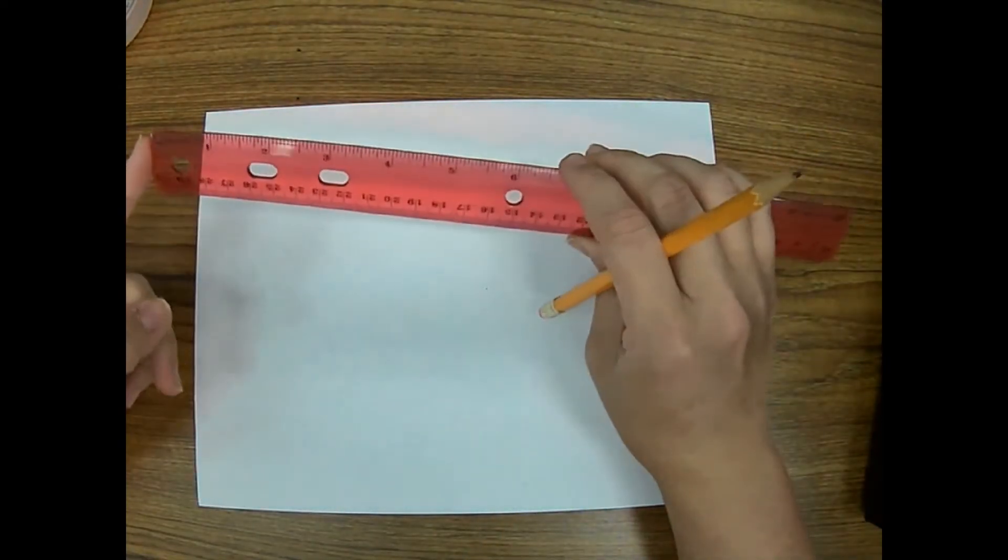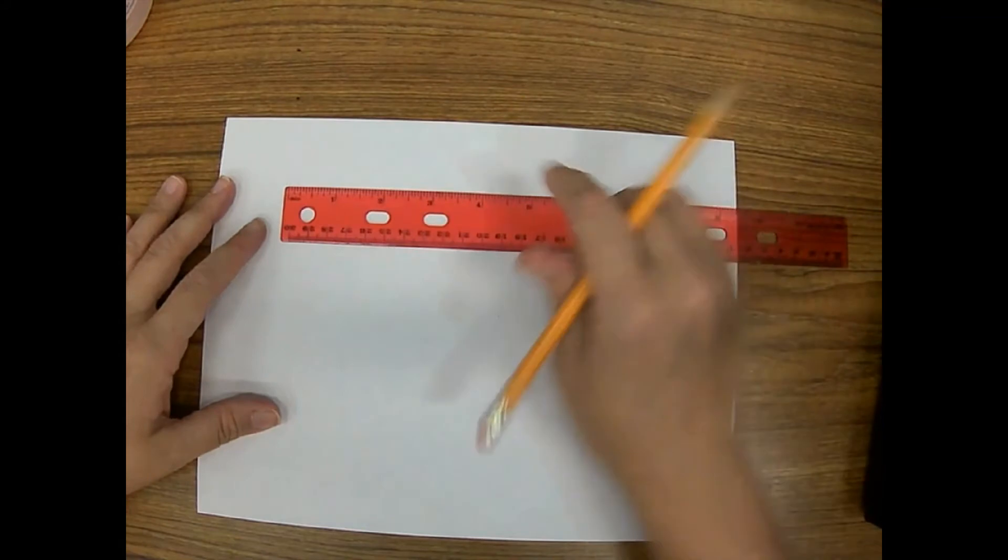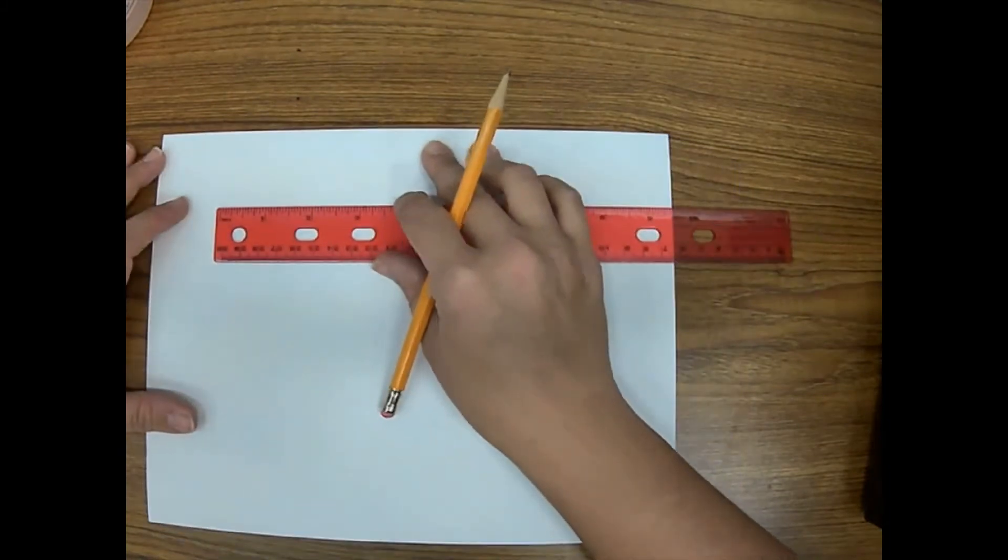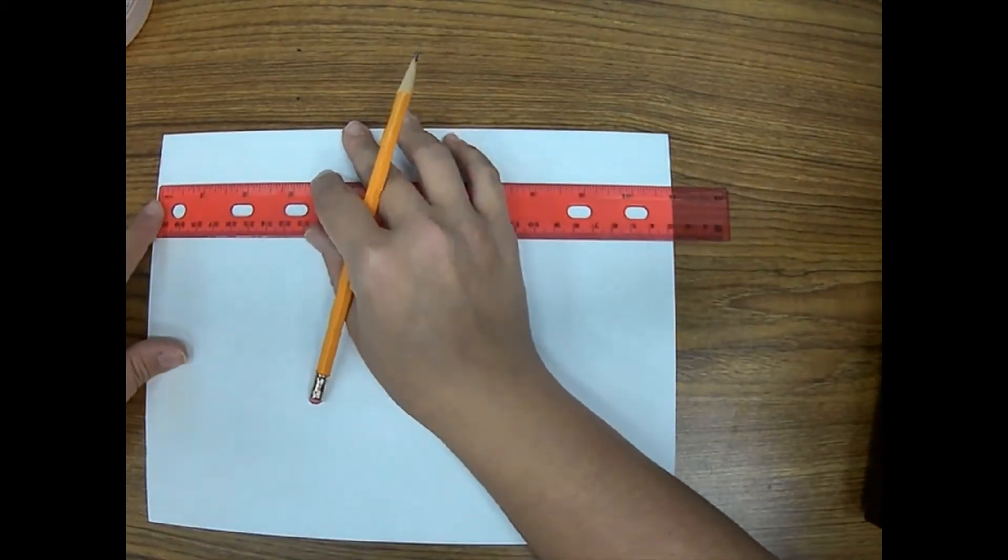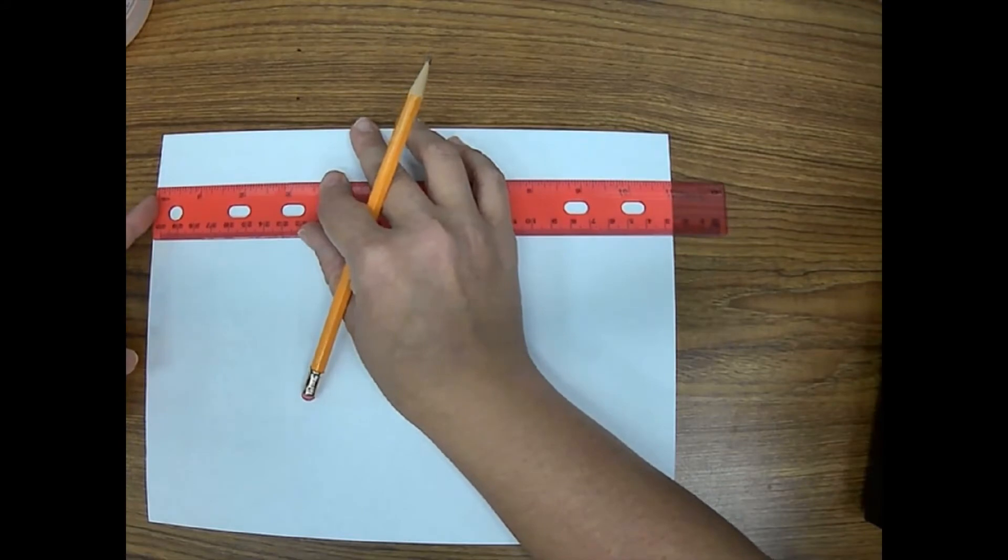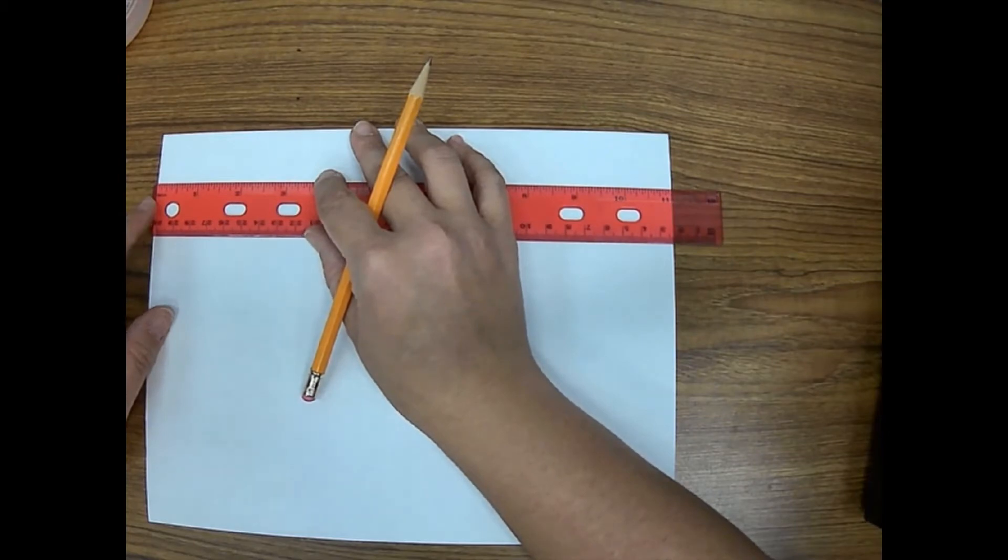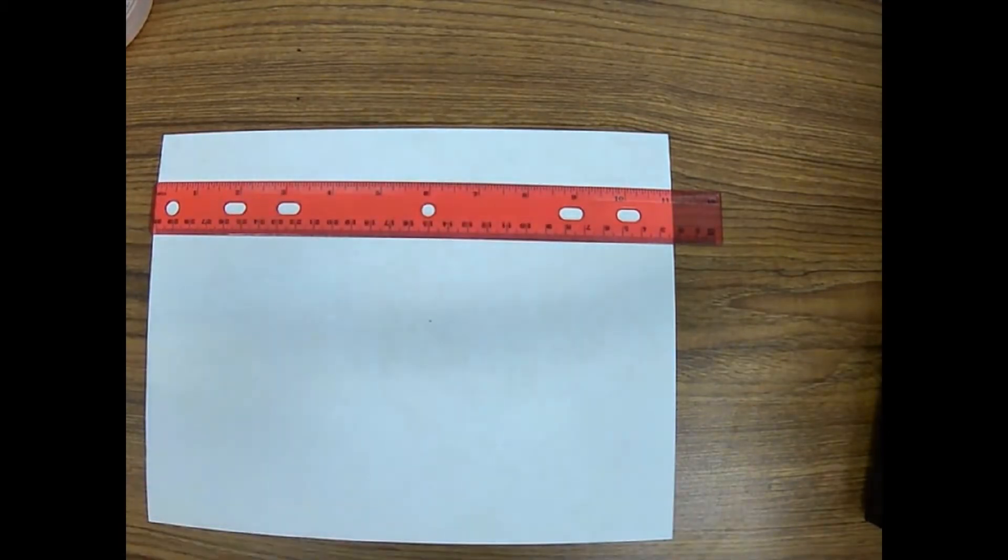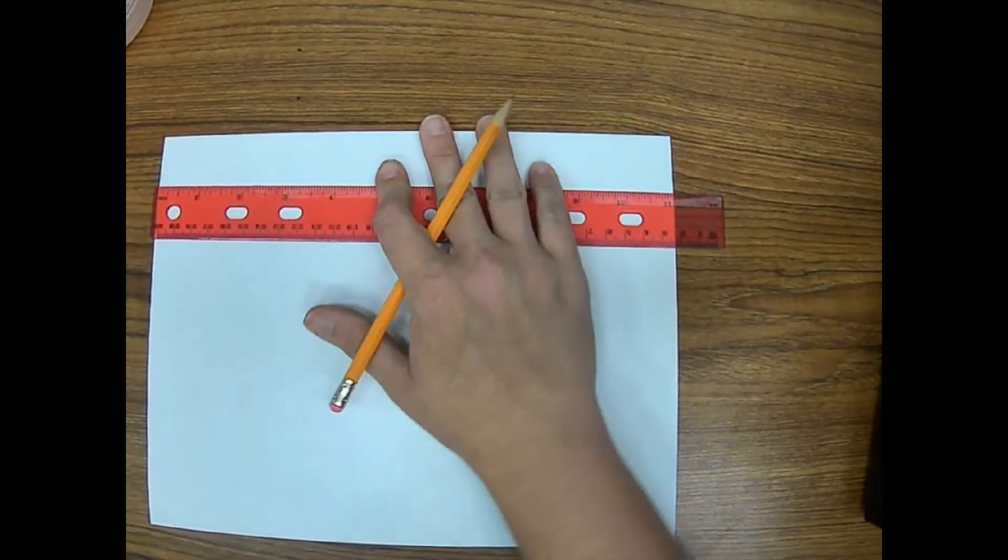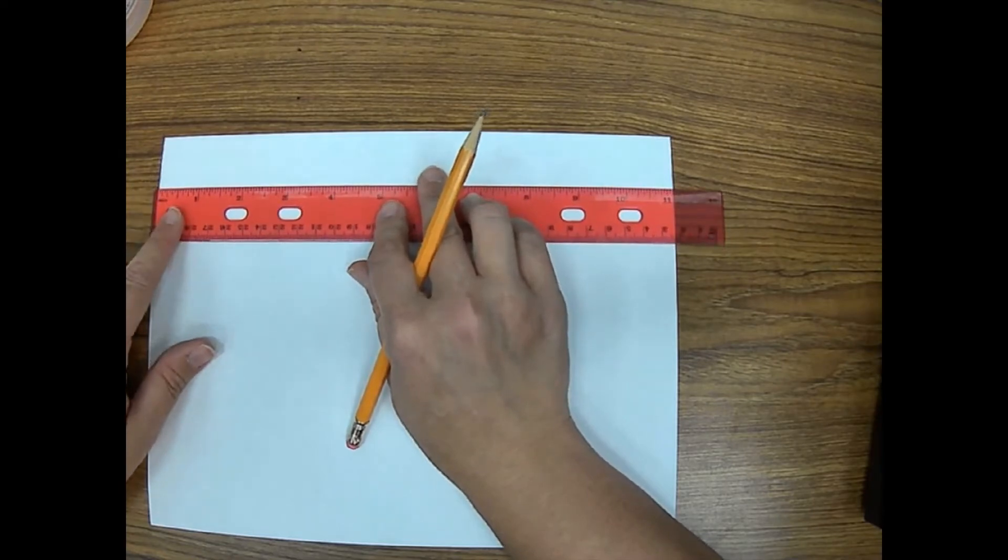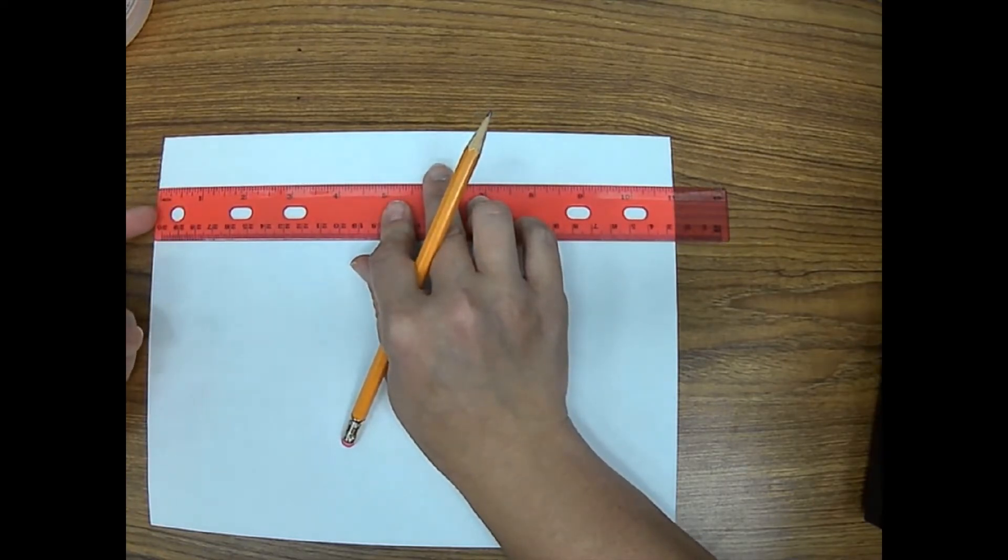Now, the important thing to know about your ruler is that some rulers are going to start directly at the edge and some rulers are going to start on the first inch mark. So it's important to know that on this ruler, it doesn't start. The first inch doesn't start at the edge.